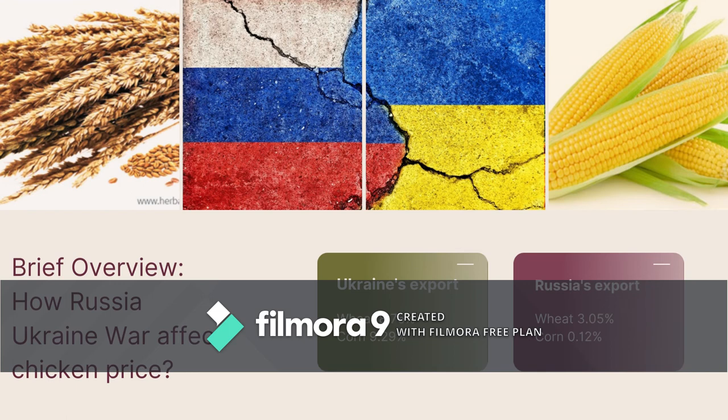Question 4: How would you explain the influence of chicken prices on fast food businesses and factors of production in Malaysia's fast food sector? Ukraine's main exports consist of wheat and corn at 8.76% and 9.29% of total exports respectively, while Russia also exports wheat at 3.05% and corn at 0.12%. Wheat and corn are used as chicken feed, so when the war began, their exports were restricted.